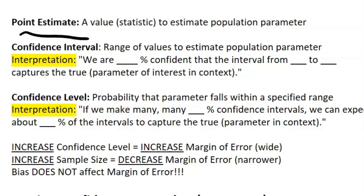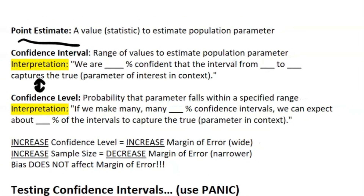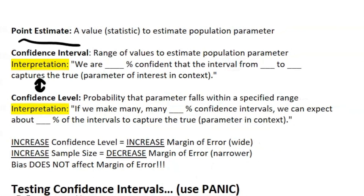We're going to be using a confidence interval to find the actual population parameter. A key thing to know is the difference between a confidence interval and a confidence level. Your confidence interval is the range of values that estimates your population parameter. Your confidence level is the actual percentage — like 90% or 95% — which is the probability that the parameter falls within a specified range.